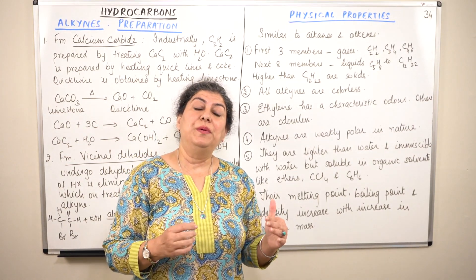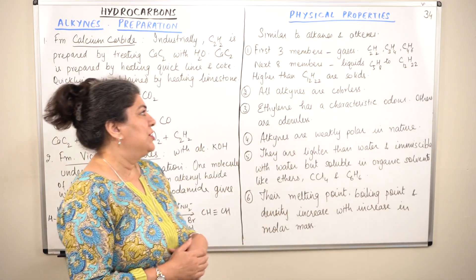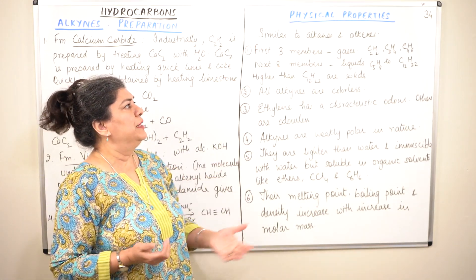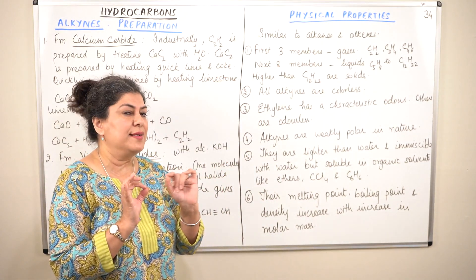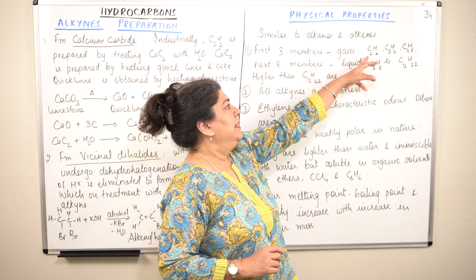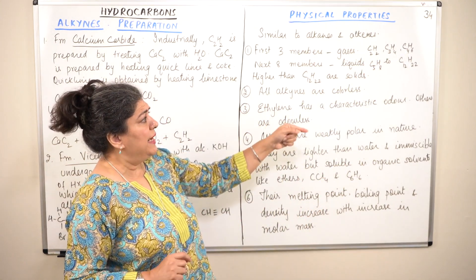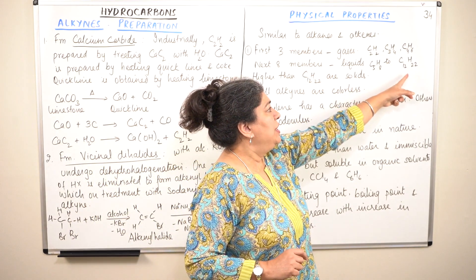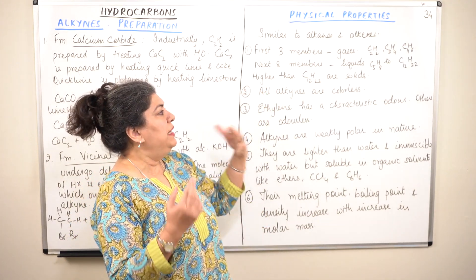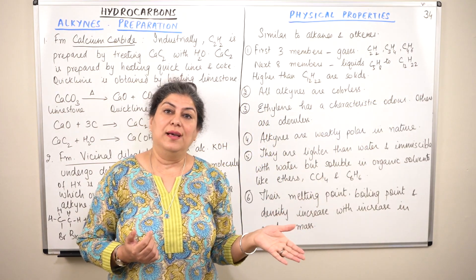The presence of the double and triple bond may impart a little bit of difference in properties. The physical properties are similar to alkanes and alkenes, not exactly the same, but similar. The first three members — ethyne, propyne, and butyne — are gases. The next eight members, from C₅H₈ to C₁₂H₂₂, are liquids. Any molecule higher than C₁₂H₂₂, that is C₁₃ onwards, would be solids.